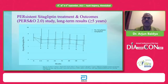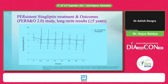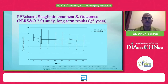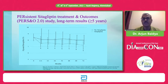Regarding the durability of glycemic reduction with sitagliptin: in the PRESS study — Persistent Sitagliptin Treatment and Outcome Study — long-term results showed sustained HbA1c reduction over 72 months. Maximum HbA1c reduction occurred at four to six months and persisted for five years with sitagliptin compared to no sitagliptin.